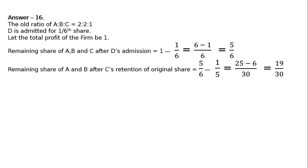Remaining share of A and B after C's retention of original share: 5/6 minus 1/5. Taking LCM 30, that is 25 minus 6 = 19/30. Because C is retaining his original share of 1/5, we deduct 1/5 from 5/6, giving 19/30.